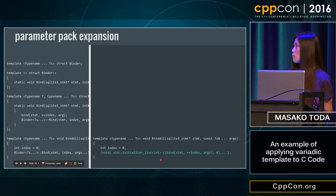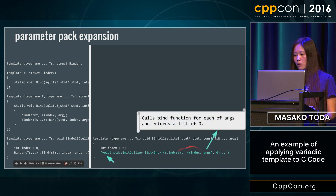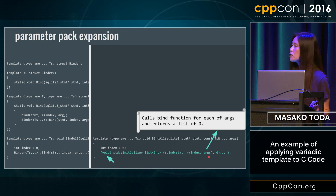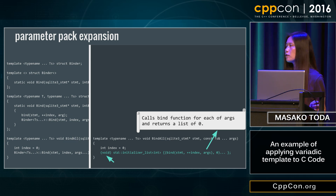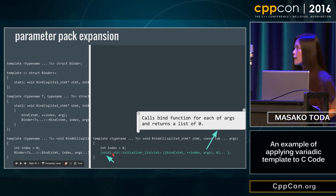So let me explain what this one line does. It calls the bind function for each argument and returns a list of zeros. The list of zeros is actually a byproduct, so we can ignore it — that's what the void cast implies.